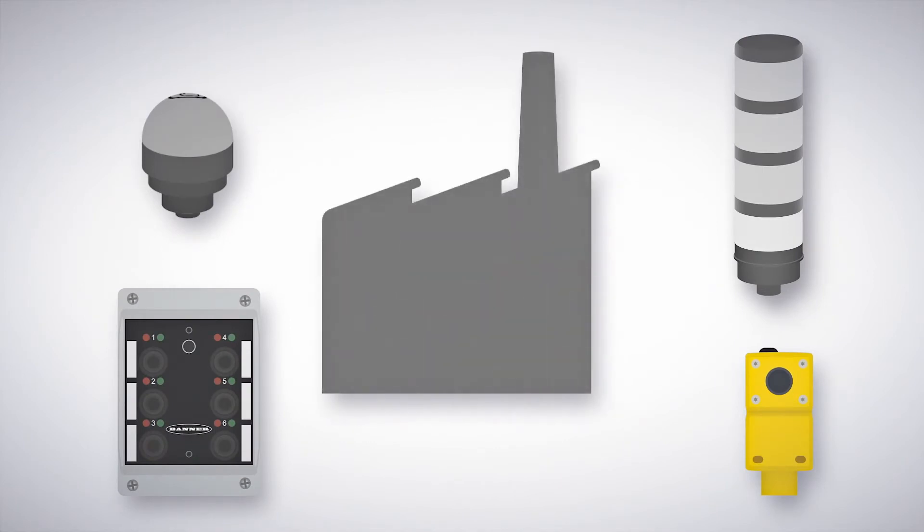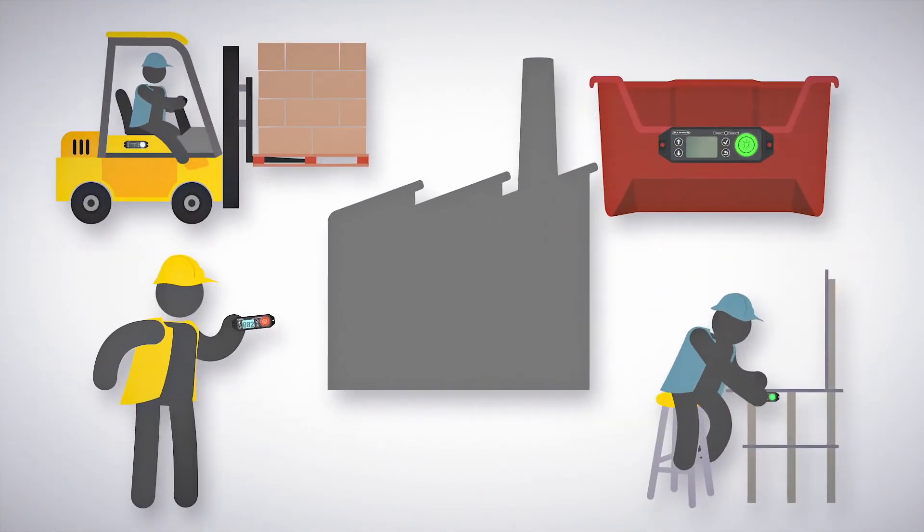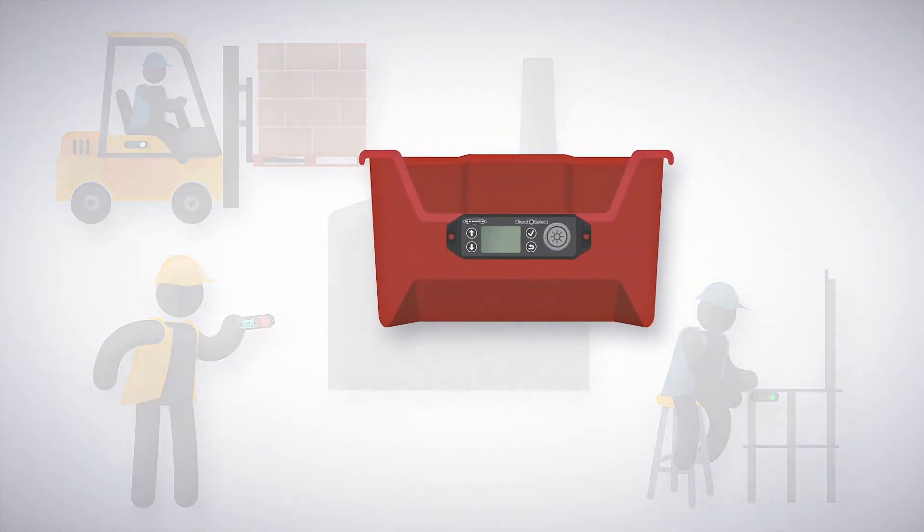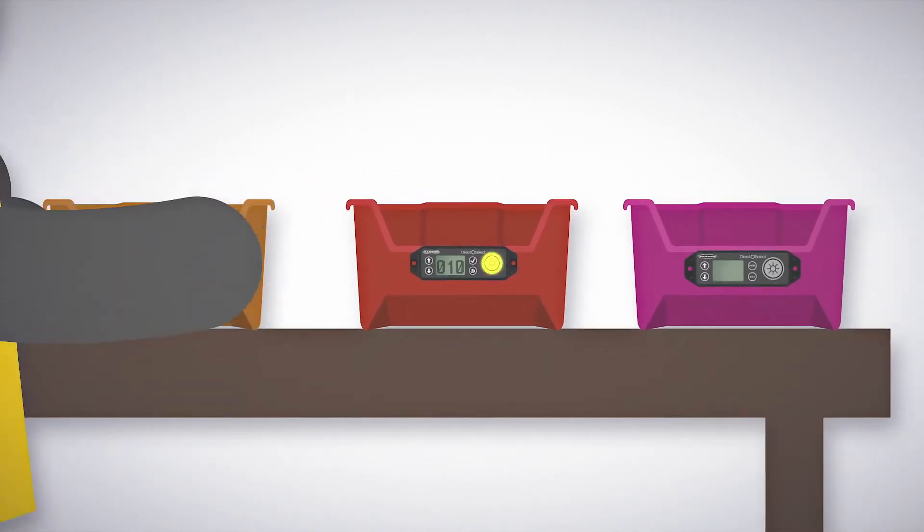For every job in your factory, the DirectSelect can enhance communication. Let's explore just a few. When mounted to containers, the DirectSelect node provides alerts and information to workers no matter where the bin is moved to.